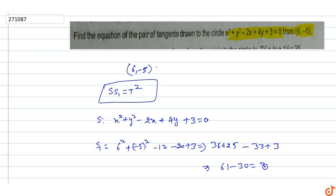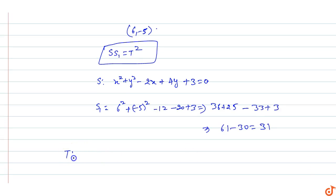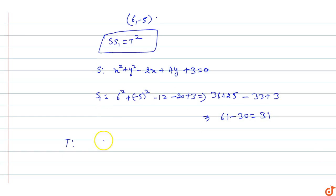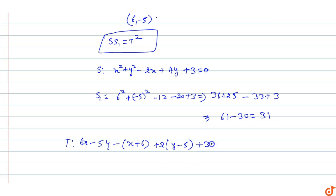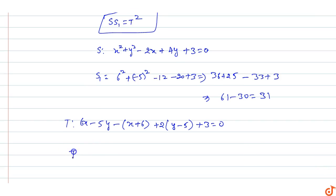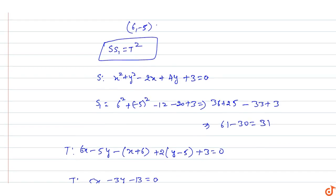S1 equals 31. Now computing T: T = x·x1 + y·y1 - (x + x1) + 2(y + y1) + 3. Substituting x1 = 6, y1 = -5: T = 6x - 5y - (x + 6) + 2(y - 5) + 3 = 5x - 3y - 13 = 0.